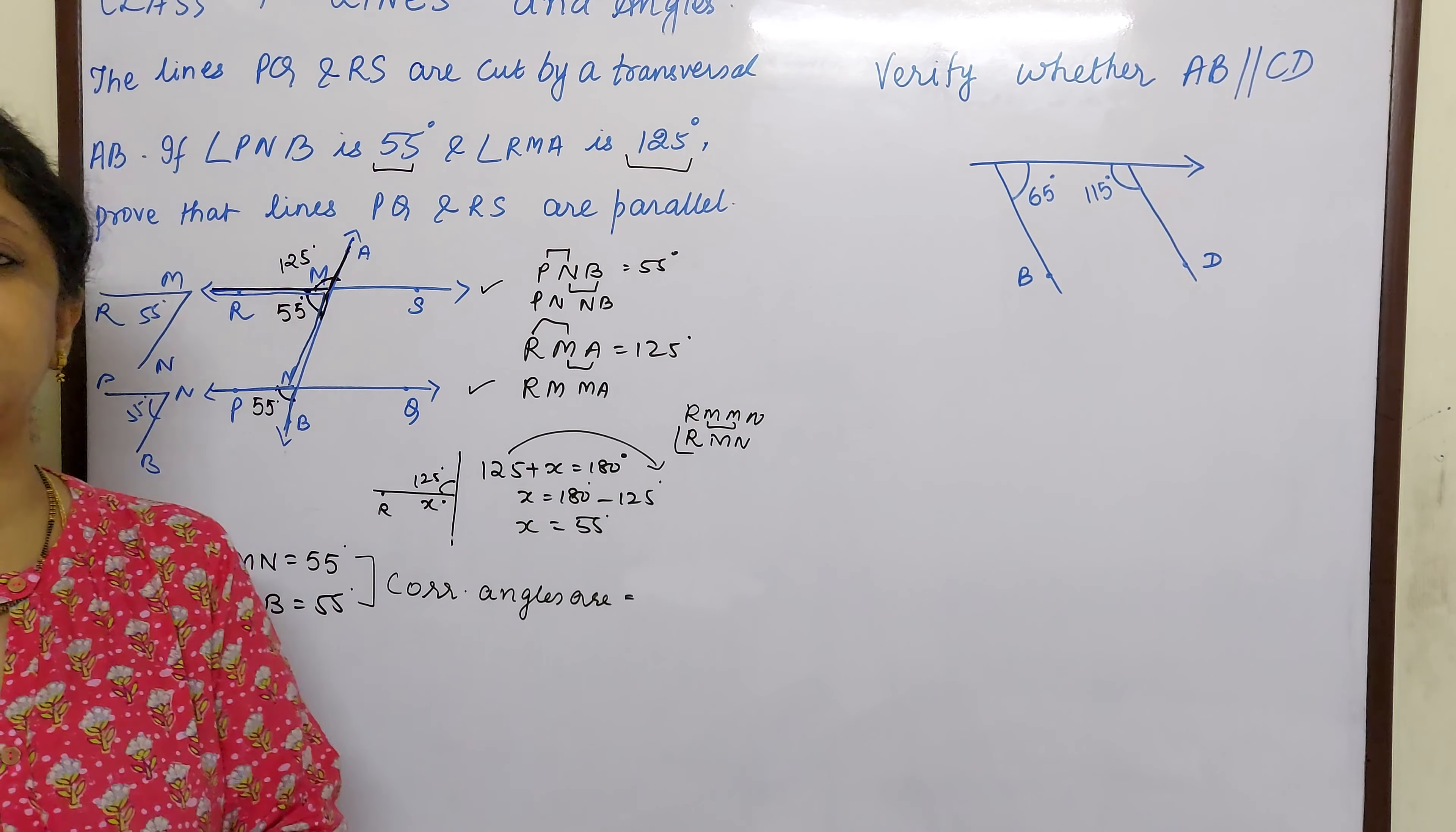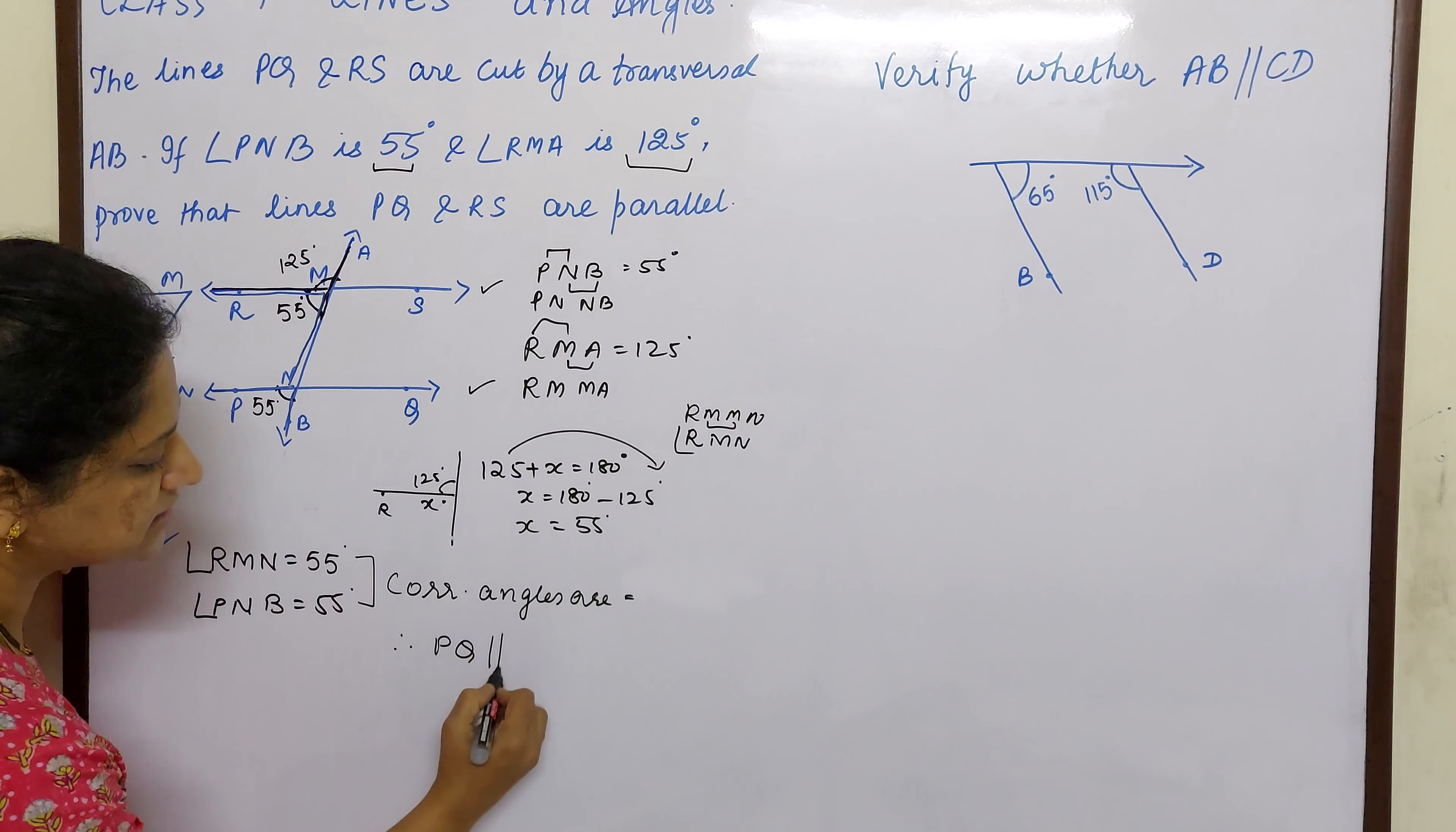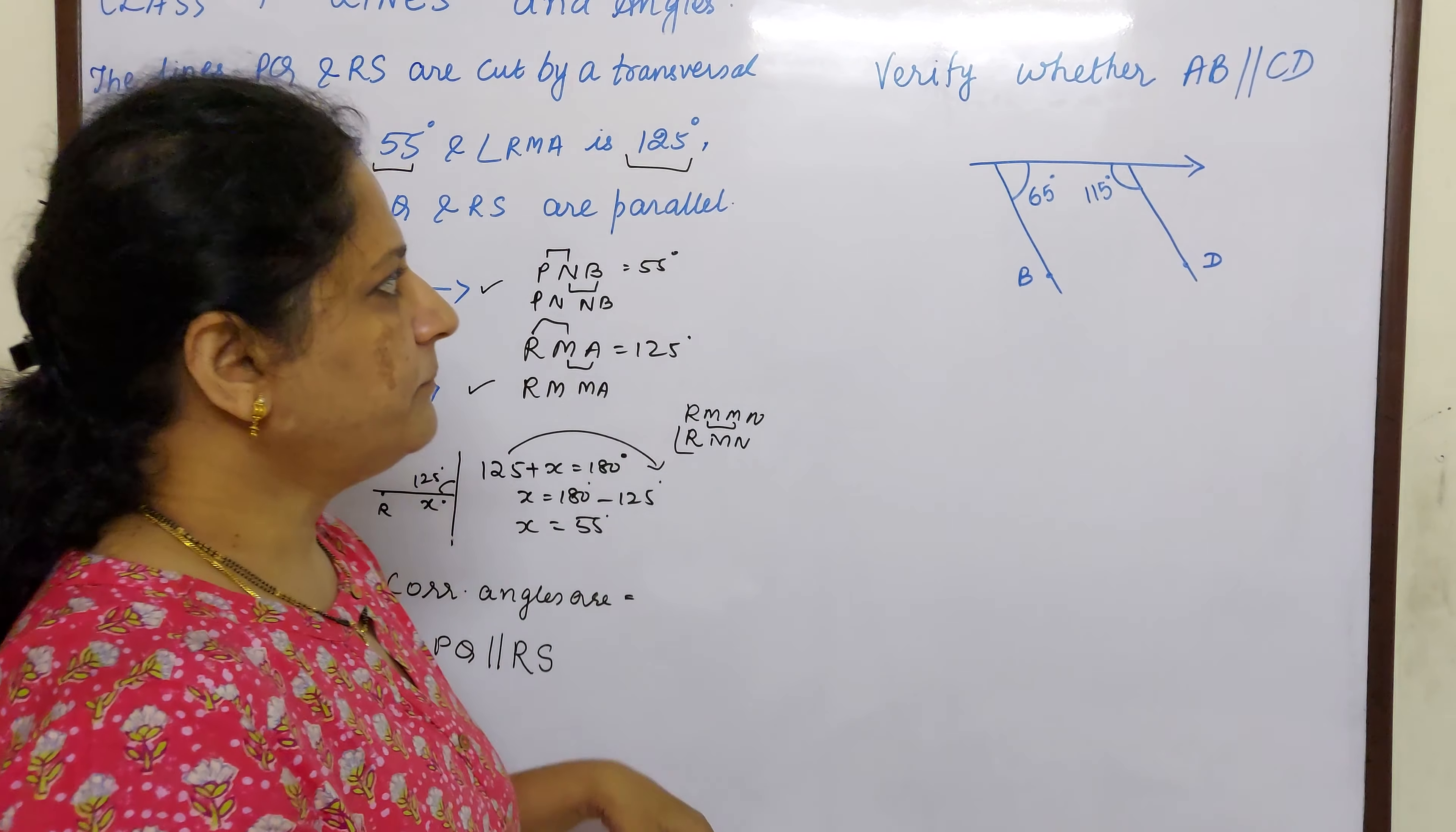When the lines are parallel. So with this we can say therefore we can say that PQ is parallel to RS as the corresponding angles are equal. Let us move to the next sum.